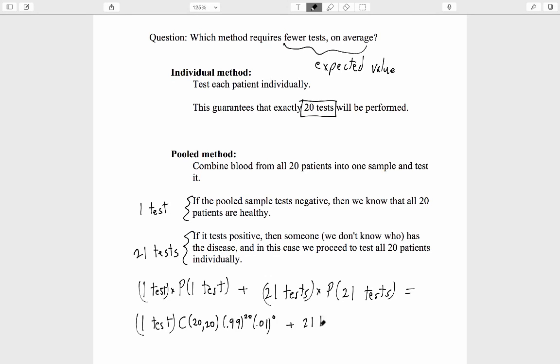So we add to that 21 tests times the probability that we do need to apply 21 tests. If at least one person has the disease, that's what makes us have to do 21 tests.